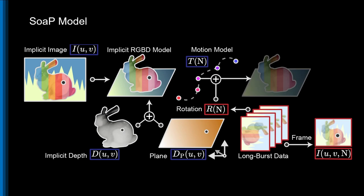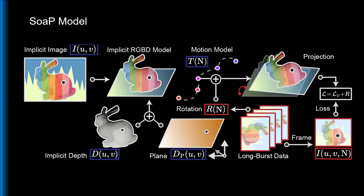we now reproject our implicit RGBD model to the camera coordinates of frame N, and calculate the loss with respect to the corresponding point in the burst frame.